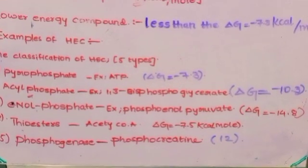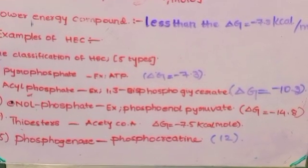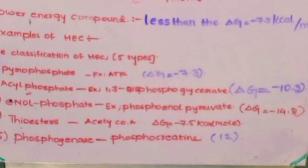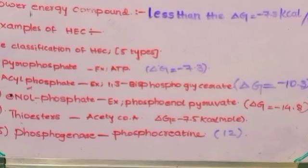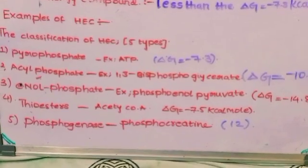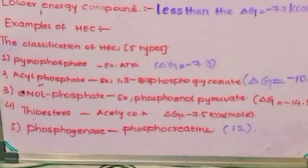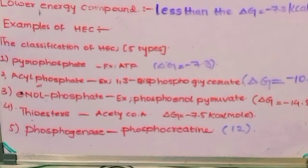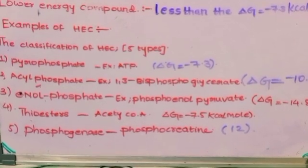First, pyrophosphate. Example: ATP (adenosine triphosphate). Remember that for pyrophosphate, ATP energy is ΔG = -7.3 kilocalories per mole. Delta G is the unit used here.